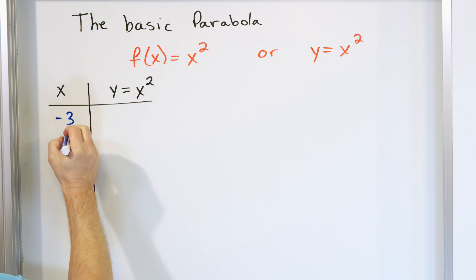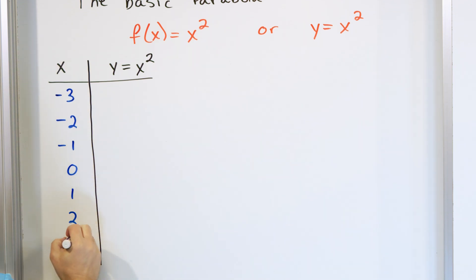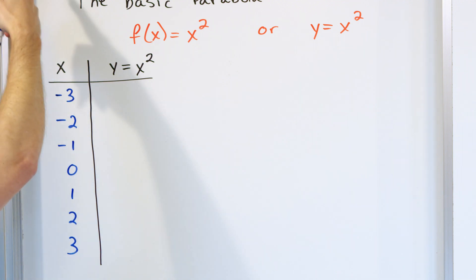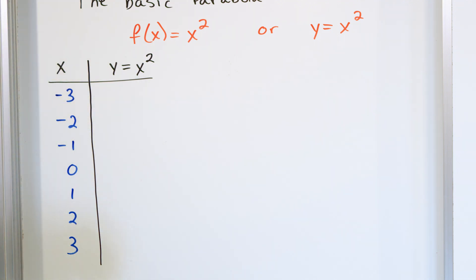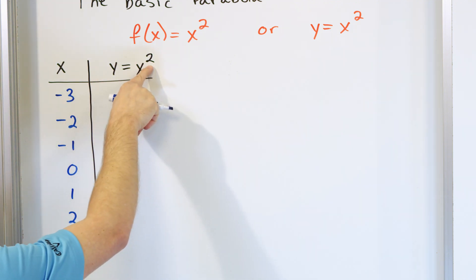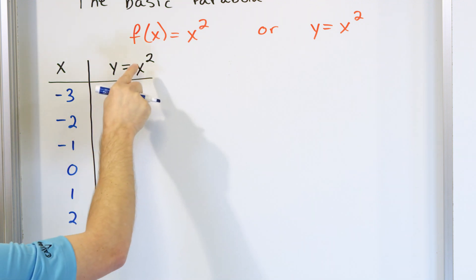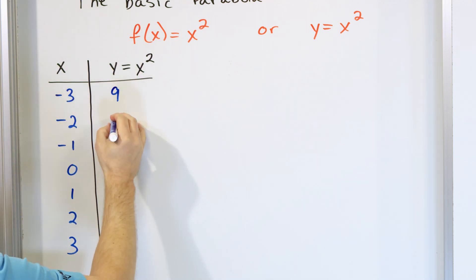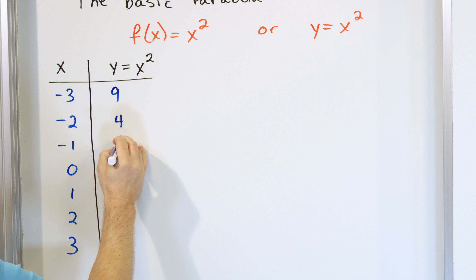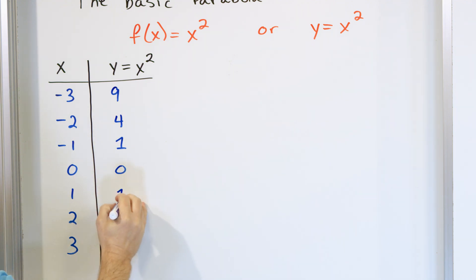We need to pick some points. Let's go from negative three, negative two, negative one, zero, one, two, three. You could go all the way to negative five or positive five, but I'm going to stick to negative three to positive three. When we take negative three and square it, negative three times negative three gives us nine. Negative two squared gives us positive four. Negative one squared gives us positive one. Zero squared is zero. One squared is one. Two squared is four. Three squared is nine.